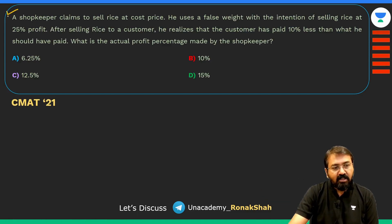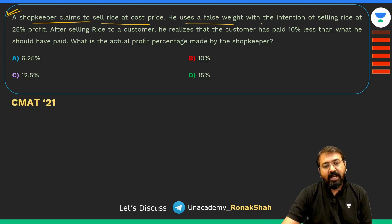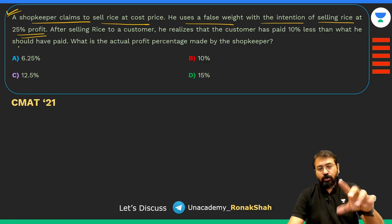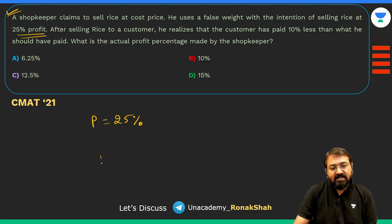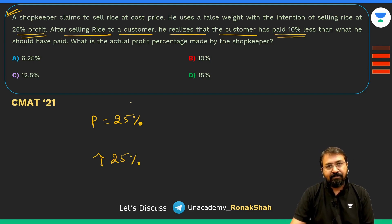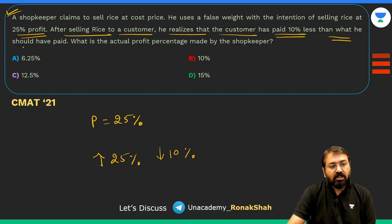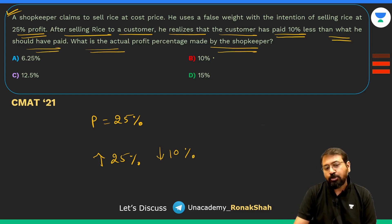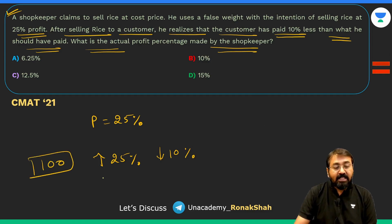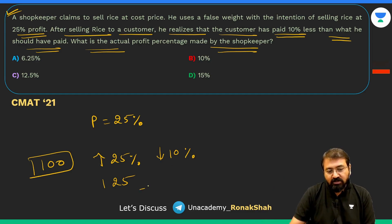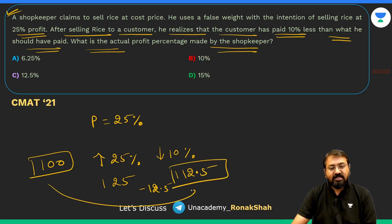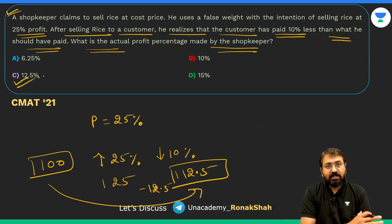A shopkeeper claims to sell rice at cost price but uses a false weight, intending to make a 25% profit. After selling, he realizes the customer paid 10% less than they should have. Suppose the cost is 100; with the false weight, the effective price becomes 125. The customer paid 10% less, so 10% of 125 is 12.5 is deducted, giving 112.5. His actual profit is therefore 12.5%.